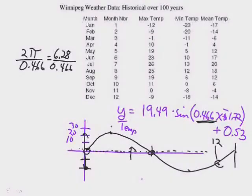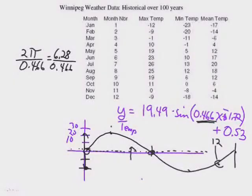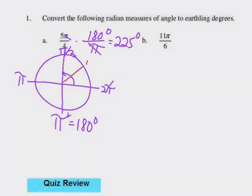The scary part about that 0.53 at the end — that is the average temperature for Winnipeg. If you had to pick one temperature to represent the entire year, it's half a degree above zero. That's the average temperature in Winnipeg — half a degree above zero. It bounces about 20 to 25 degrees above and below that. At least there are no poison snakes.